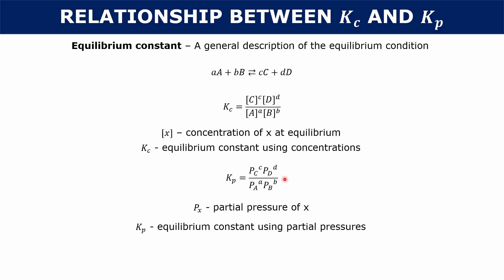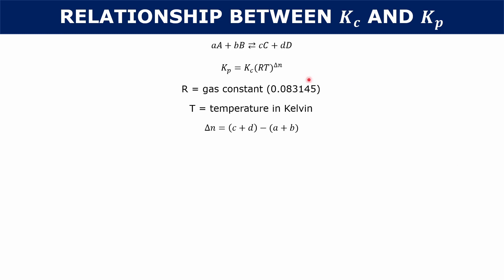Now, let's say you had a reaction where A, B, C, and D were all gases, and you wrote the Kc and the Kp for that reaction. Would Kc and Kp necessarily be the same? They would not. In fact, there is a relationship between Kc and Kp. Your Kp equals your Kc times RT to the delta N. Your R is your gas constant, T is your temperature in Kelvin, and delta N is the sum of your product coefficients — so c and d — minus the sum of your reactant coefficients — so a plus b.